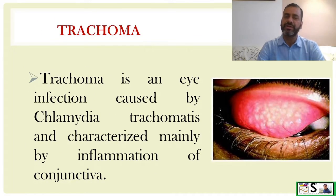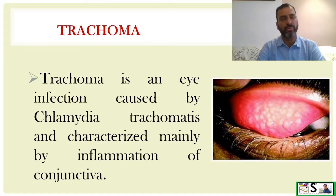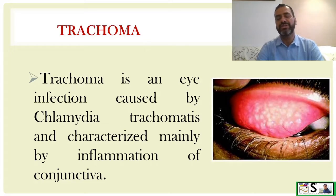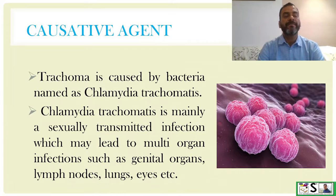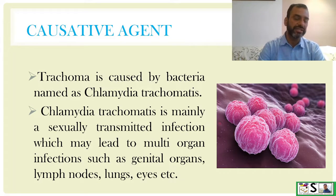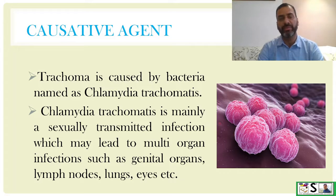What is trachoma? Trachoma is an eye infection caused by Chlamydia trachomatis and characterized mainly by inflammation of the conjunctiva. Trachoma is caused by a bacteria named Chlamydia trachomatis.